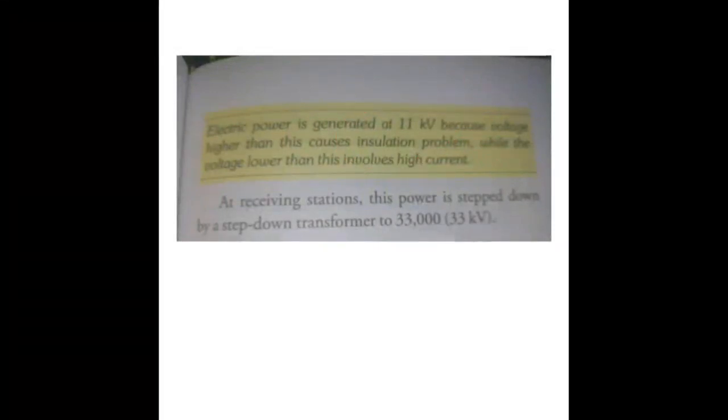Electric power is generated at 11 kilovolt. It is generated at 11 kilovolt because voltage higher than this can cause insulation problems, and lower than 11 kilovolt involves higher current which causes a heating effect. In the grid system, power generated at the power station is stepped up, and eventually it gets reduced until we consume it in our homes or city.